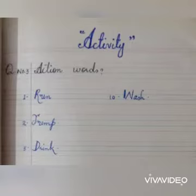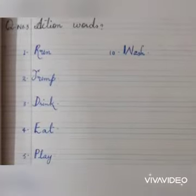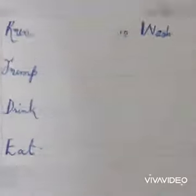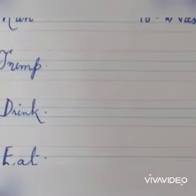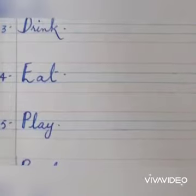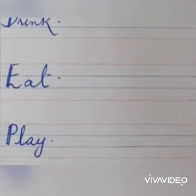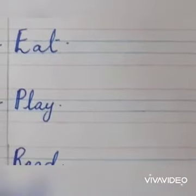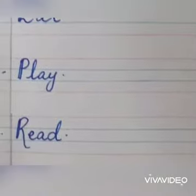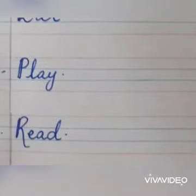Jo kaam hona zahir karte hain. Number one: Run — Run ke kya mahinye hote hain? Daudna. Number two: Jump — Jump ke kya mahinye hote hain? Chhalang lagana. Number three: Drink — Drink ke kya mahinye hote hain? Peena. Number four: Eat — Eat ke kya mahinye hote hain? Khana.